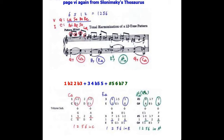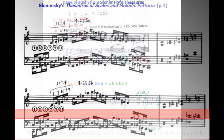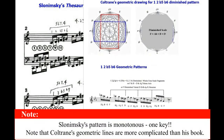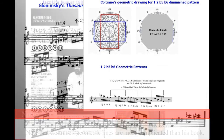It looks like this: 1, flat-2, 2, flat-3. Using tritone substitution, flat-2 becomes 5 and flat-3 becomes 6 — so that's 1-2-5-6. And in the E major parts and A-flat parts, you can do the same. We can make the 1-2-5-6 patterns without a geometric drawing. It's simpler than you think. We should not overlook that Coltrane's geometric patterns are more complicated than Slonimsky's book. Slonimsky's pattern is written in one key. You should notice Coltrane uses the geometric drawing to create geometric patterns of his own.